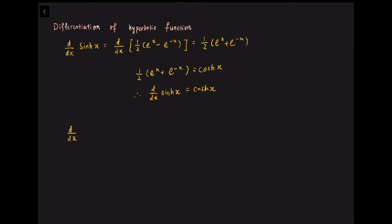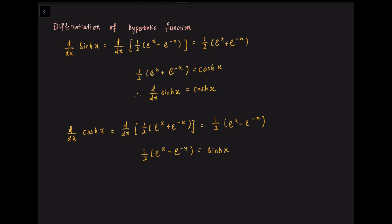For cosh(x), d/dx of cosh(x) equals d/dx of (1/2)(e^x plus e^(−x)), which equals (1/2)(e^x minus e^(−x)). From the definitions, we know that (1/2)(e^x minus e^(−x)) equals sinh(x). Therefore, d/dx of cosh(x) equals sinh(x).